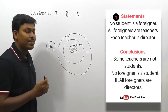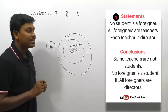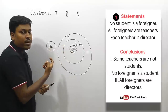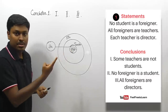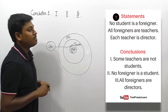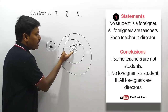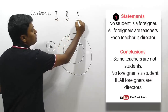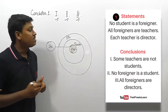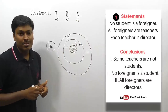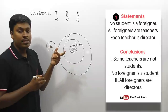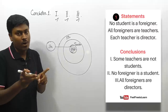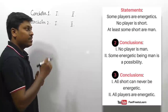Conclusion number two: 'no foreigner is a student' — we already know no student is a foreigner, so this is exactly correct. Conclusion number three: 'all foreigners are directors' — which is also correct. So all three conclusions follow. The key learning from this question: 'each teacher is a director' — 'each' denotes 'all,' so all teachers are directors.